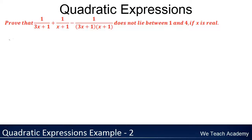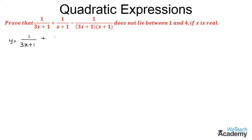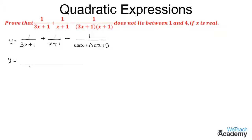Let us consider the given quadratic equation as y. So we get y is equal to 1 divided by (3x + 1), plus 1 divided by (x + 1), minus 1 divided by (3x + 1)(x + 1). On taking LCM, the denominator is (3x + 1)(x + 1) and the numerator terms are (x + 1) + (3x + 1) - 1.